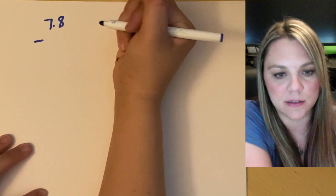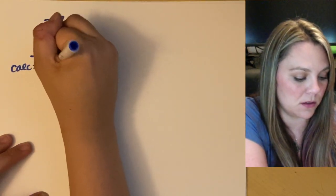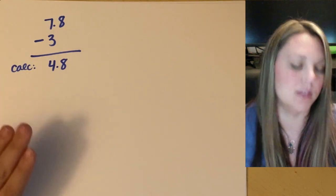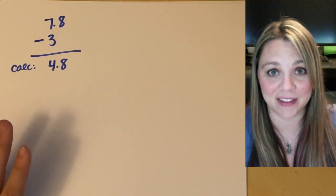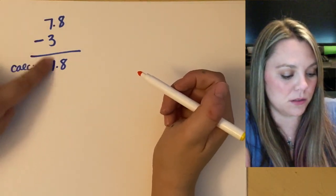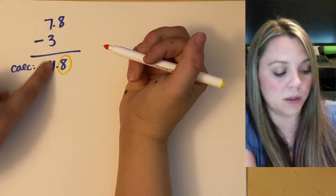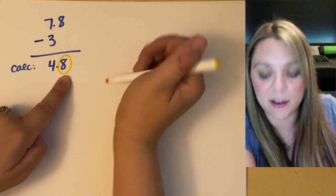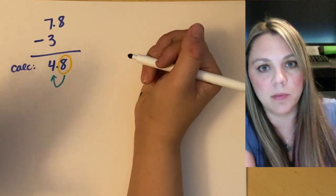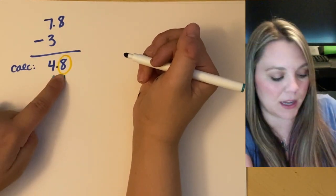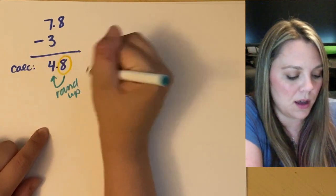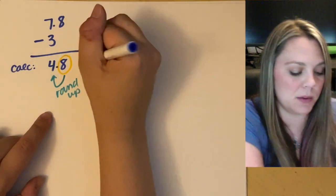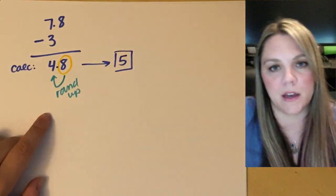We'll do another example. If I had 7.8 minus 3, my calculator would spit out 4.8. This is not correct. So I can only go to my 1's place value because the 3 only went to the 1's place value. So anything beyond that, I can't have it. It is important to have this here, though, so that I can figure out, am I going to round up or do I stay the same? And the 0.8, this 8, is going to make the 4 round up. So my actual answer is not going to be 4.8. My actual answer should be 5.